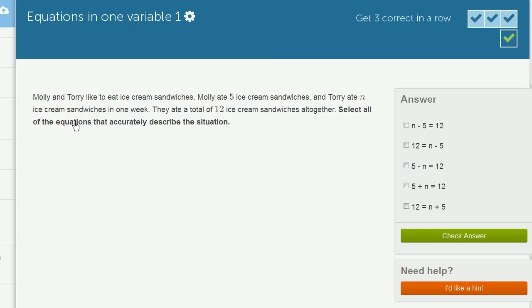Molly and Tori like to eat ice cream sandwiches. Molly ate 5 ice cream sandwiches, and Tori ate N ice cream sandwiches in one week. They ate a total of 12 ice cream sandwiches together. Select all of the equations that accurately describe the situation. So Molly ate 5, Tori ate N. So 5 plus N is the total that they ate. And they tell us that that must be equal to 12, that the total that they ate together is 12. So 5 plus N is 12. So we immediately see that one right over there.